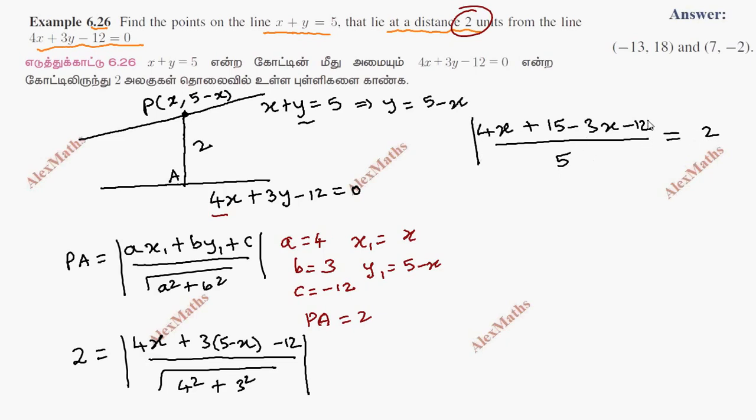So modulus: 4x minus 3x, 15 minus 12 plus 3, all divided by 5. So mod equals 2. Remove modulus to the other side: plus or minus 2. So x plus 3 by 5 equals 2.